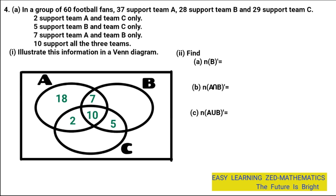28 support team B. Looking at circle B, we have 7, 10, and 5 already placed — fans supporting more than one team. Adding these: 7 plus 10 gives 17, plus 5 gives 22. Then 28 minus 22 gives 6. So 6 goes in the non-intersecting part of circle B. Adding 7 plus 6 plus 10 plus 5 confirms the total of 28 fans who support team B.